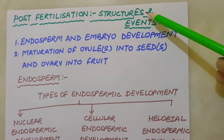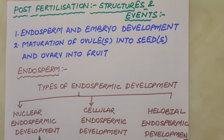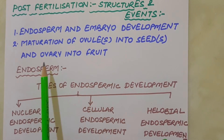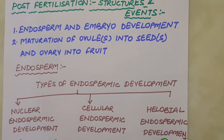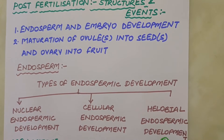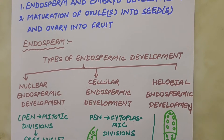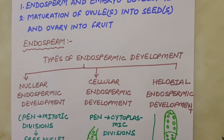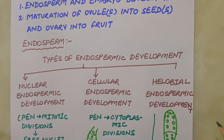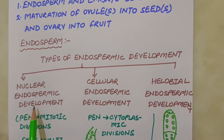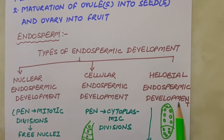Next is post-fertilization structures and events. Following double fertilization, events of endosperm and embryo development, maturation of ovule into seed and ovary into fruit are collectively termed as post-fertilization events. Endosperm development precedes embryo development. The primary endosperm cell, having 3N condition, divides repeatedly and forms a triploid endosperm tissue. The cells of this tissue are filled with reserve food material used for the nutrition of the developing embryo. There are three types of endosperm development: nuclear, cellular and helobial.